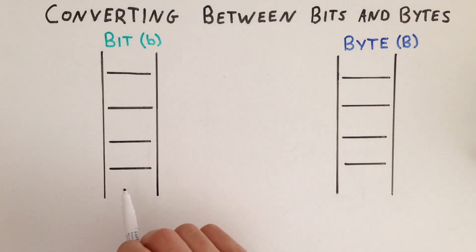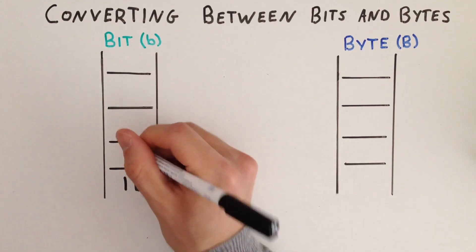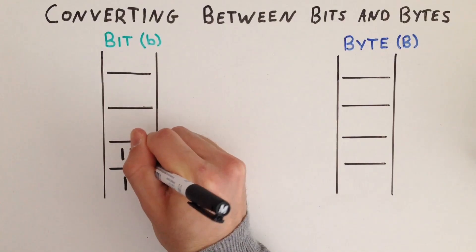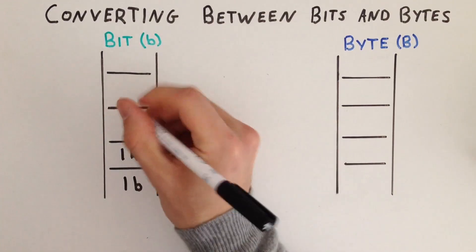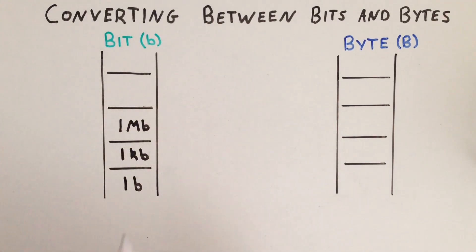Treat each space between the rungs of the ladder as a different level. As we climb up the ladder, the level increases. Let's look at the bit ladder first. The lowest level at the base is one bit, one small b. Next level up is one kilobit. Then up again, we have one megabit. We generally don't need to go higher than a megabit for the bit ladder.